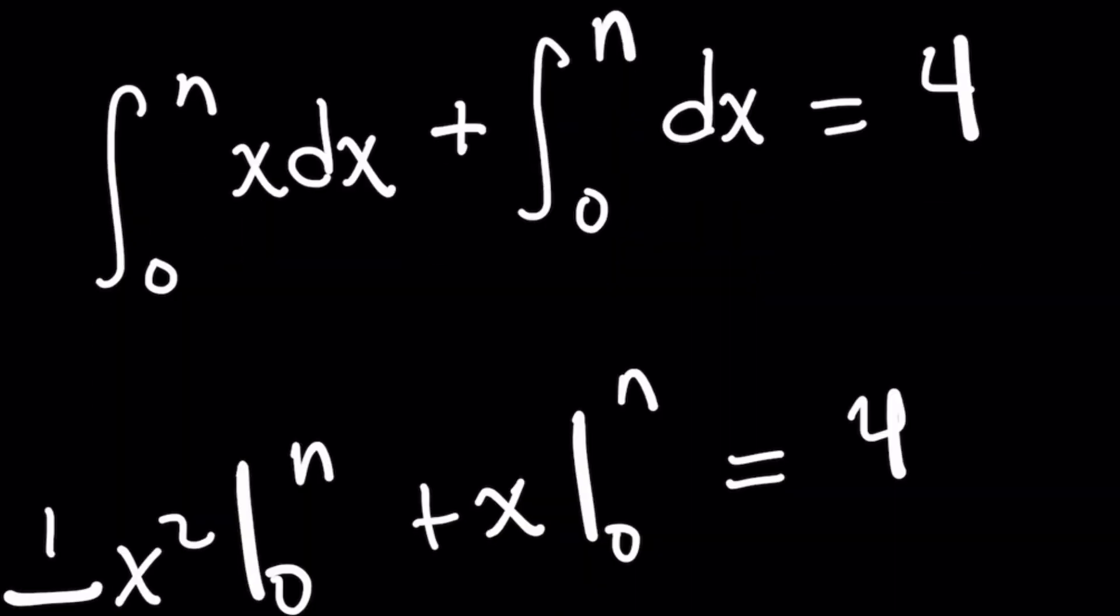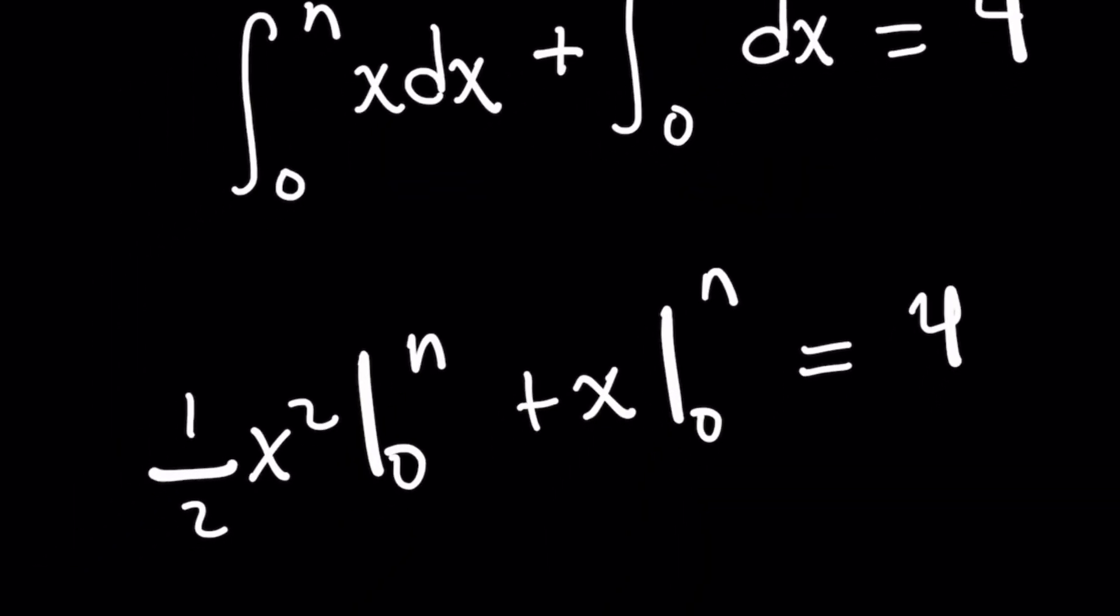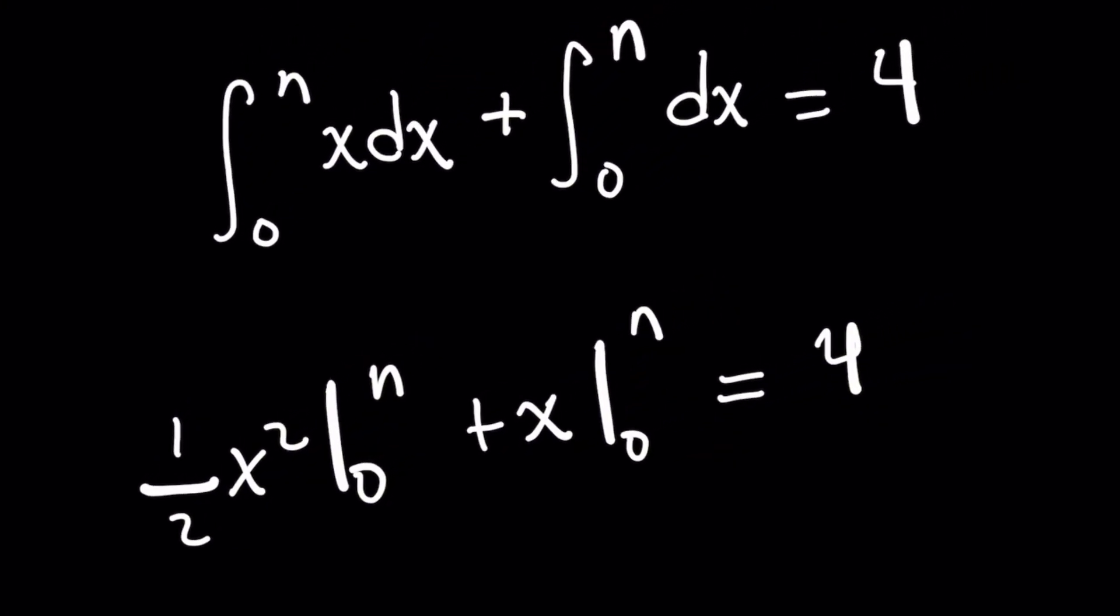Now, if you remember, the integral of x is simply 1 half x squared plus c. But remember, I don't need the plus c here because for a definite integral, because you are subtracting the result of plugging in the upper and lower limits, the c's would basically cancel out. And so when we evaluate 1 half x squared from 0 to n plus the integral of dx, which is basically 1 dx, and we know the integral of 1 is just x itself,